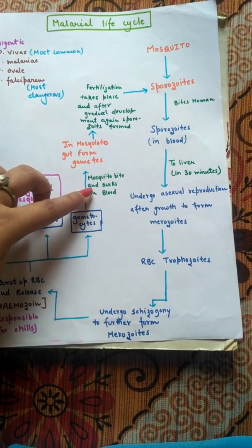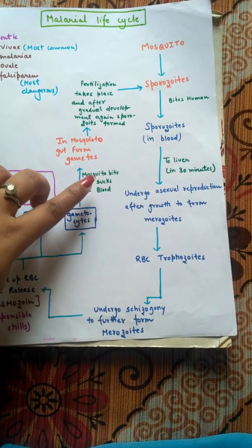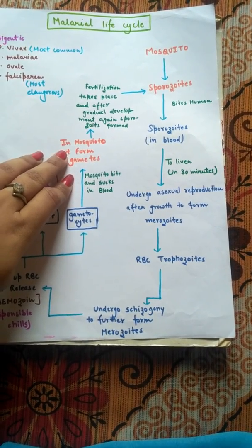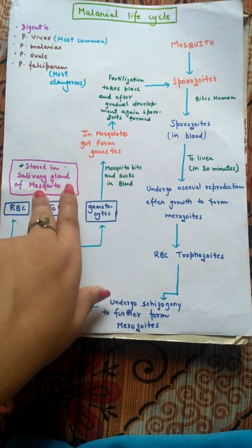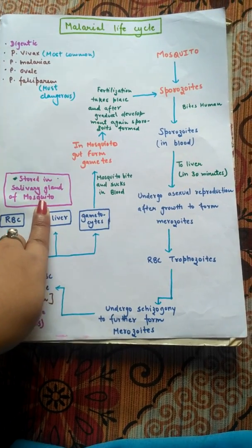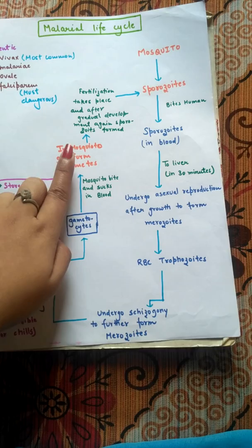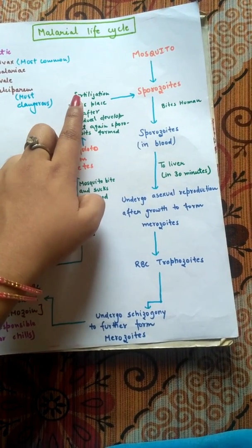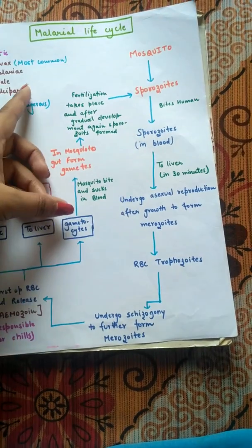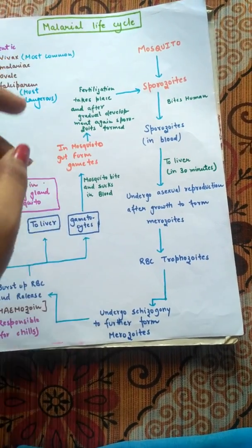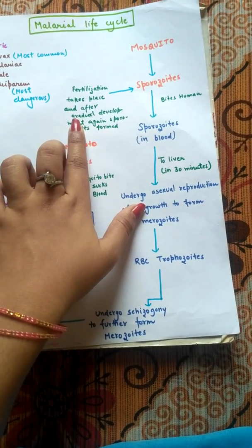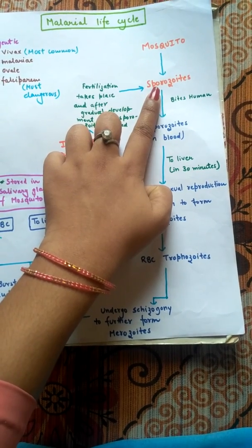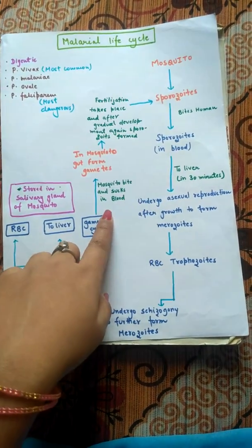When the mosquito bites the human again and sucks blood, the gametocytes are taken up into the mosquito. They reach the gut of the mosquito, where gametes are formed from the gametocytes. Fertilization then takes place, and after gradual development, sporozoites are formed again. These sporozoites are now present inside the gut of the female Anopheles, and the life cycle starts again.